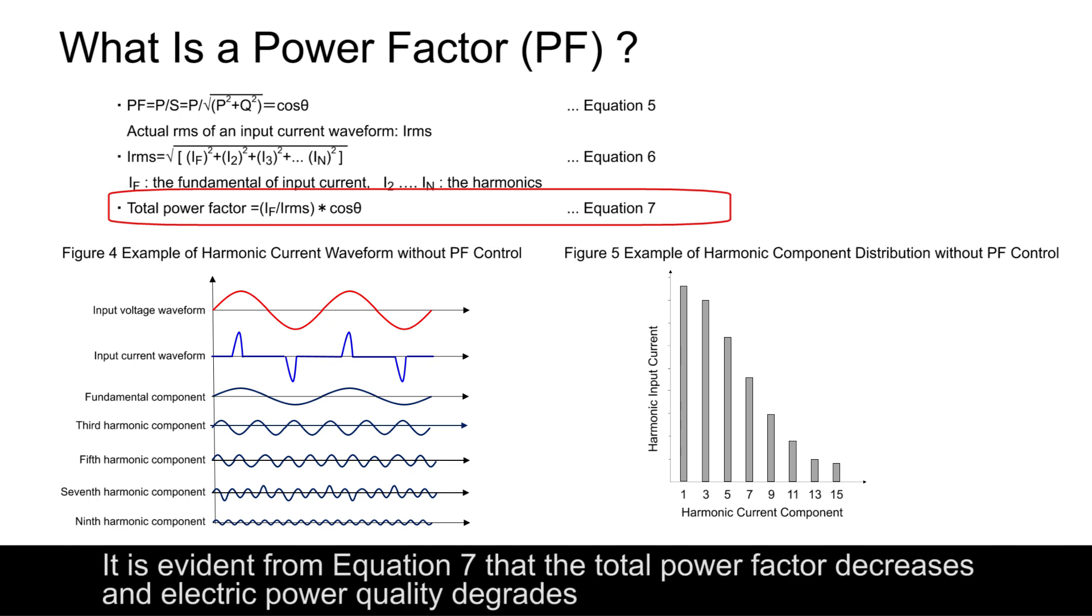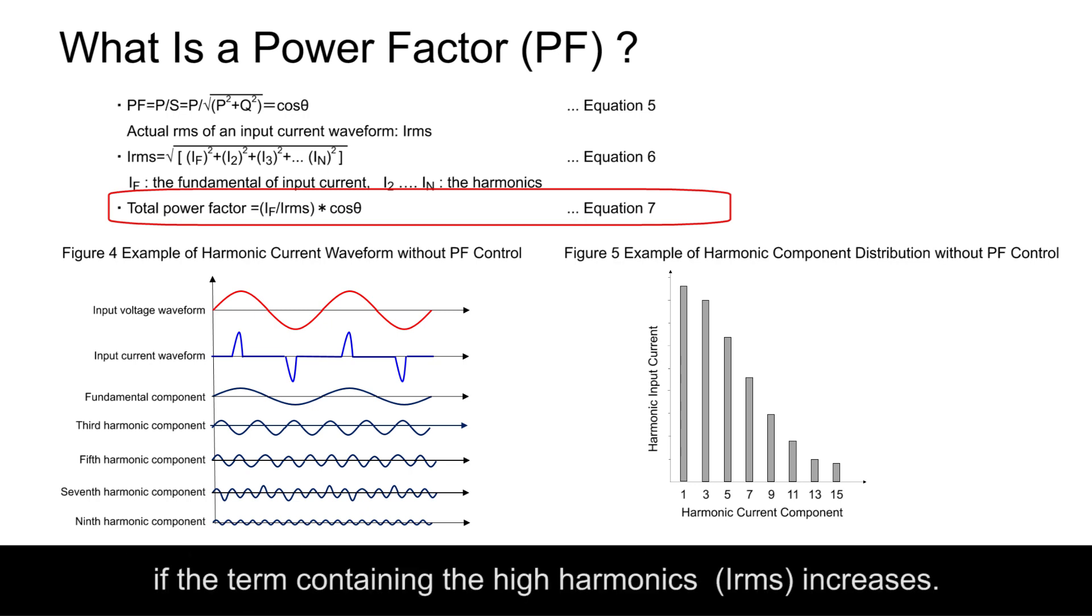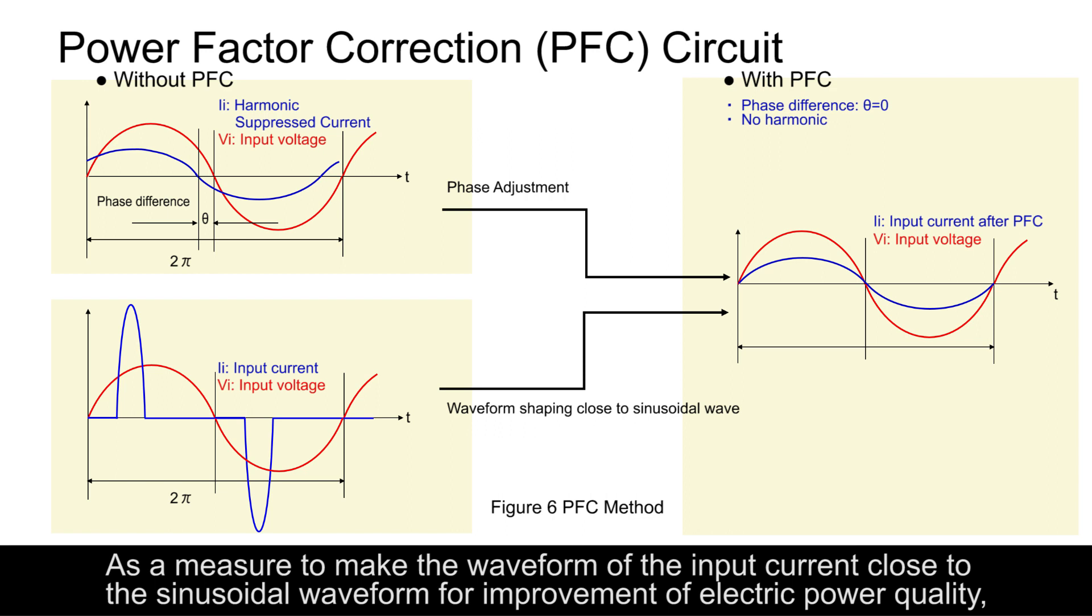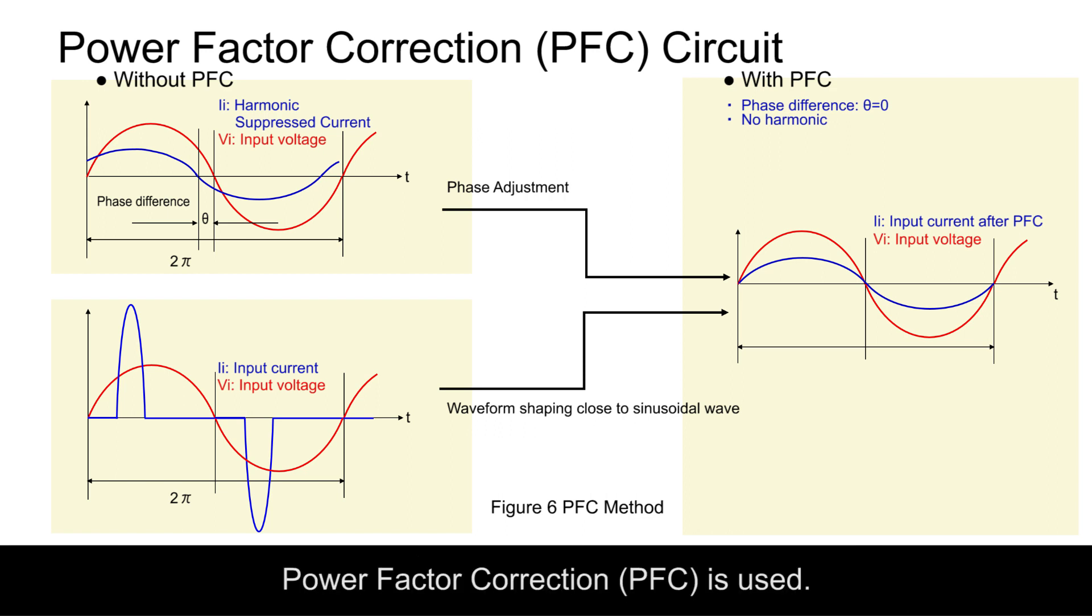It is evident from equation 7 that the total power factor decreases and electric power quality degrades if the term containing the high harmonics IRMS increases. As a measure to make the waveform of the input current close to the sinusoidal waveform for improvement of electric power quality, power factor correction PFC is used.